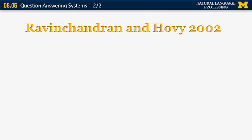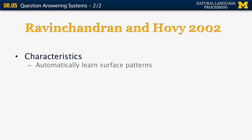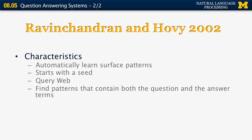The third system in this segment is by Ravichandran and Hovy from ISI, 2002. It is based on automatically learning surface patterns about sentences that are likely to contain answers to a given question. It starts with a seed, then queries the web, and finds patterns that contain both the question and the answer terms. For example, if the question is 'who wrote Hamlet' and it knows the correct answer is Shakespeare, it will search for documents containing both words and try to identify patterns that link them together.